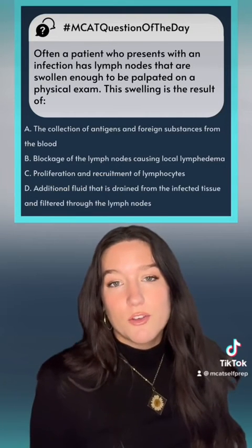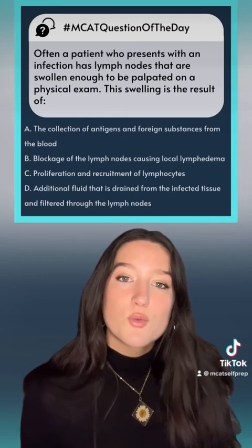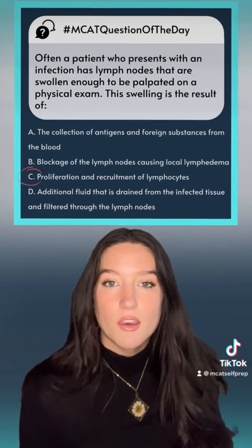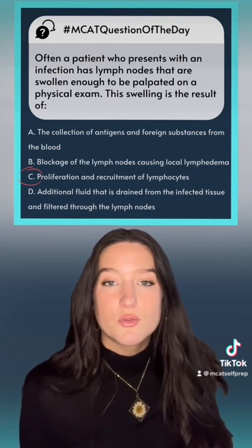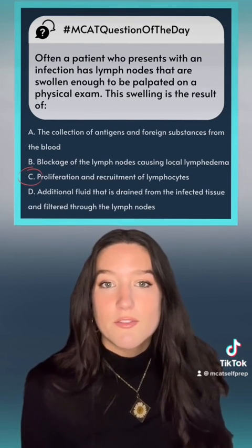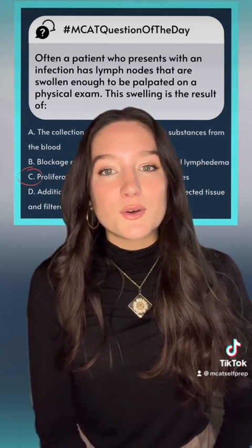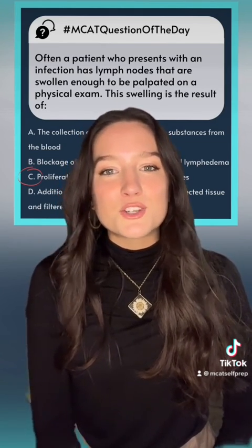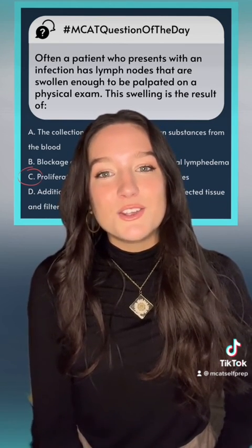Now that we've reviewed the lymphatic system, we can look at our answer choices. Answer choice C — the proliferation and recruitment of lymphocytes — gives us the best explanation for why the lymph nodes would swell when a patient presents with an infection. If you enjoyed this MCAT question of the day, give us a follow and go check out MCATselfprep.com where we have many tips, tricks, and resources on how to ace your MCAT. Good luck on your MCAT journey — you've got this!